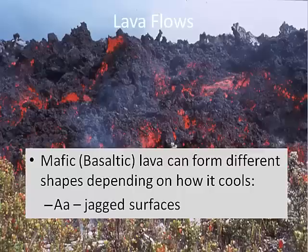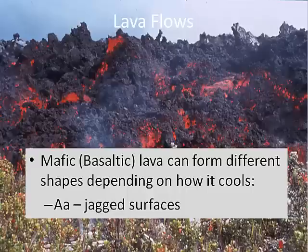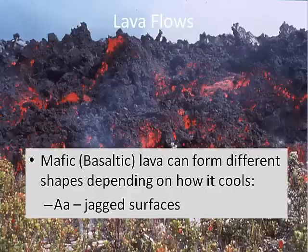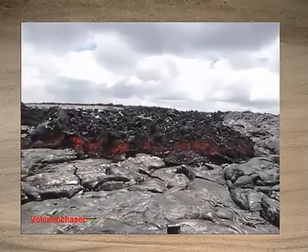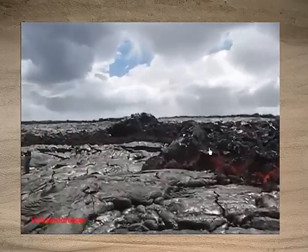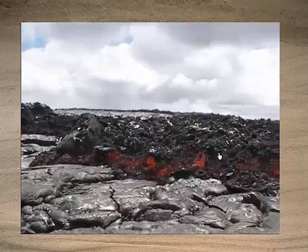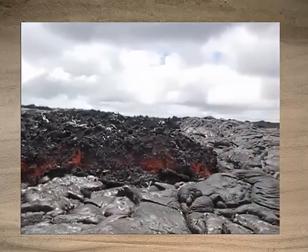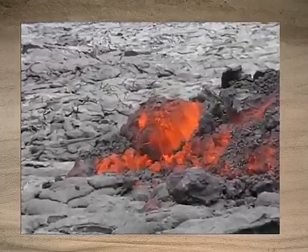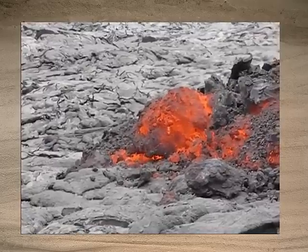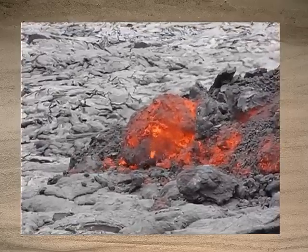Another type of lava from mafic eruptions is a'a. A'a has very jagged surfaces — you could walk across pahoehoe after it's cooled and your feet would be fine, but you can't walk across a'a because it's like broken glass. Here you can see pahoehoe with thicker magma moving over it, and as it solidifies it forms these jagged pieces of lava. It actually sounds like glass breaking as it's forming.